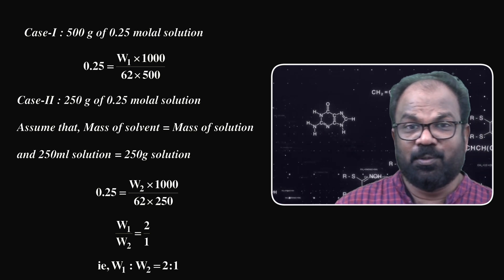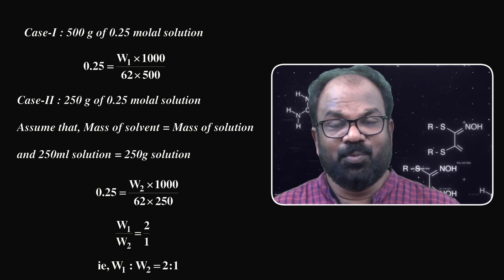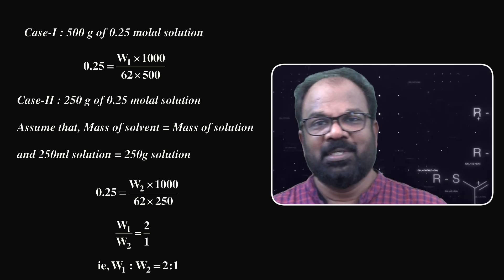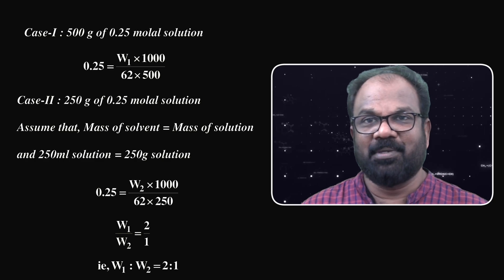We will get W1 by W2 equals 2 by 1. Therefore W1 to W2 equals 2 to 1. So here the answer is option number 4.